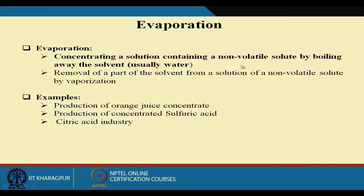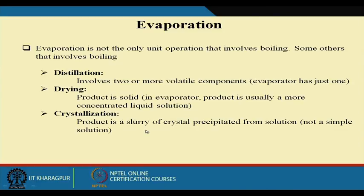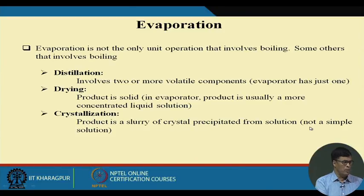Evaporation is basically used for concentrating a non-volatile solid by boiling away the solvent and removing part of the solvent from the solution by vaporization. Examples include production of orange juice concentrate, production of concentrated sulfuric acid, and the citric acid industry. Evaporation can be used for distillation involving two or more volatile components, for drying where the product is solid, and for crystallization where the product is slurry crystals separated from solution.